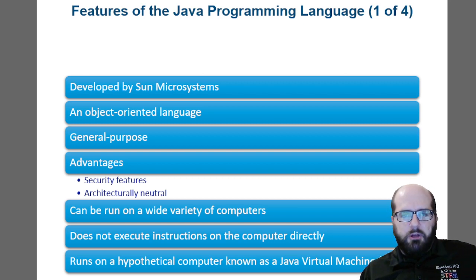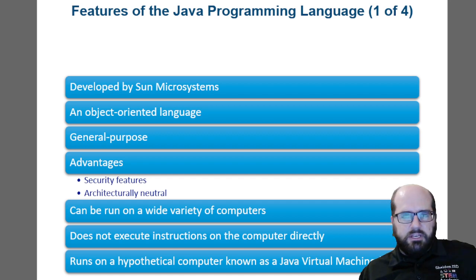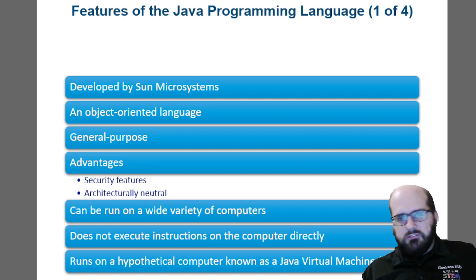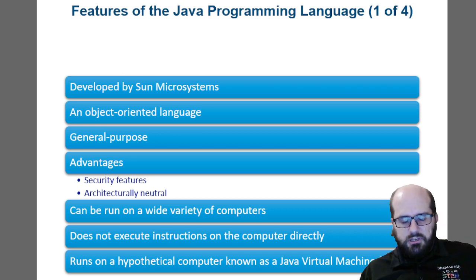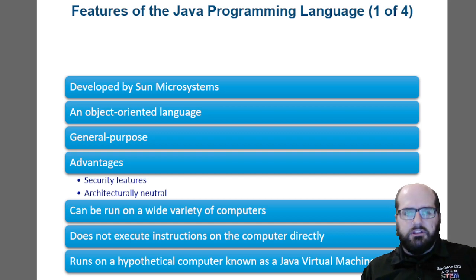They developed Java as an object-oriented programming language that would be general purpose — that it could be used for all kinds of things, like running data or developing games. The advantages were that it was secure because it was object-oriented. As we've talked about before, the encapsulation processes allowed it to have security features.